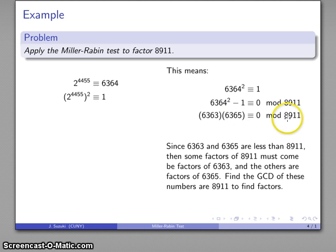Therefore, some of the factors have to come from here, and the rest of the factors have to come from there. I'll find the greatest common divisor of the two numbers, and that gives me my factorization.